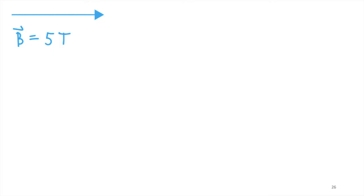For example, I have a magnetic field vector represented by vector B and it is equal to 5 Tesla. So I can represent this vector as an arrow. This is a typical drawing of an arrow.